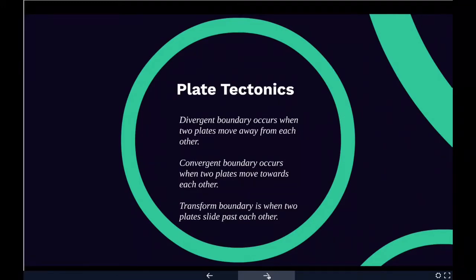A divergent boundary occurs when two tectonic plates move away from each other. Along these boundaries, lava spews from long fissures and geysers spurt superheated water. Frequent earthquakes strike along the rift. Beneath the rift, magma — which is molten rock — rises from the mantle, oozes up into the gap, and hardens into solid rock, forming new crust on the torn edges of the plates.